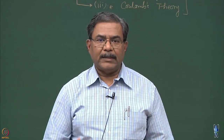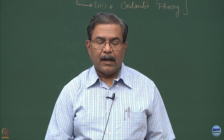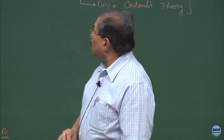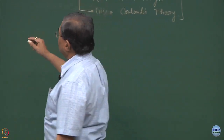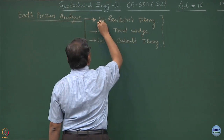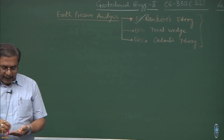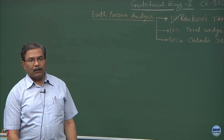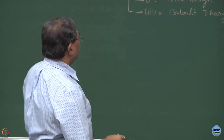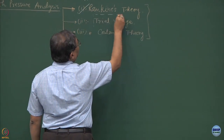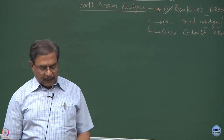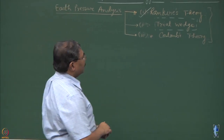We had been discussing about analyzing earth pressures. In the previous lecture, I talked about the theory proposed by Rankine. I will continue with that discussion — earth pressure analysis employing Rankine's theory, which has already been completed. The second type of analysis normally done to solve most day-to-day issues is the trial wedge, which I will be discussing today. The third tool for analyzing earth pressures is Coulomb's theory, which I will cover slightly later.